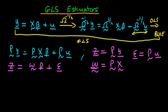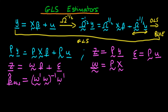We can estimate OLS on this transformed system quite easily, using our familiar OLS estimator in matrix form. That is: β̂_OLS = (Ω̃' Ω̃)^(-1) Ω̃' z, where z is the transformed dependent variable.